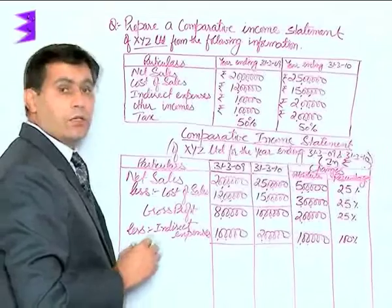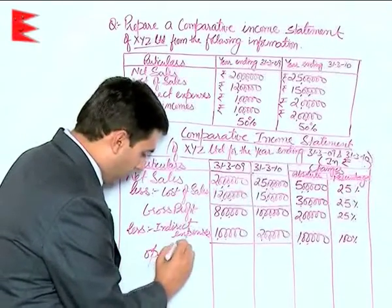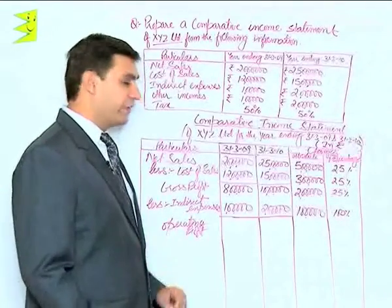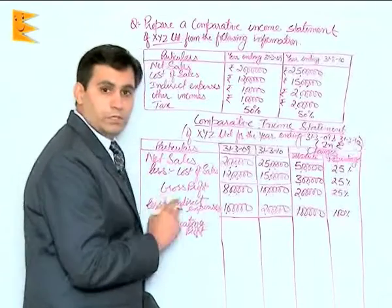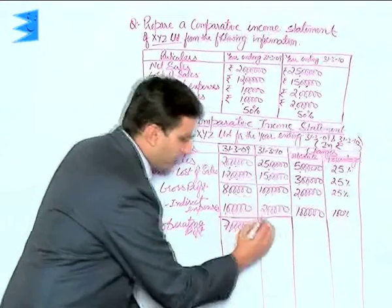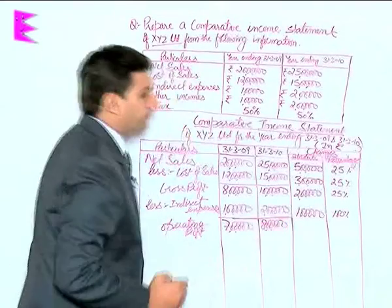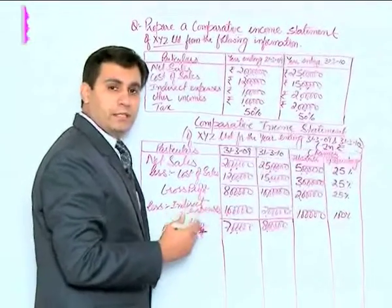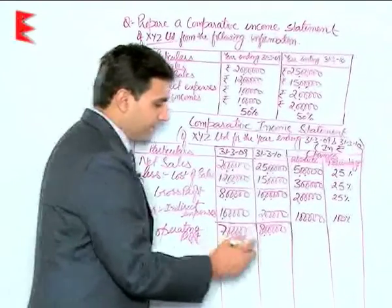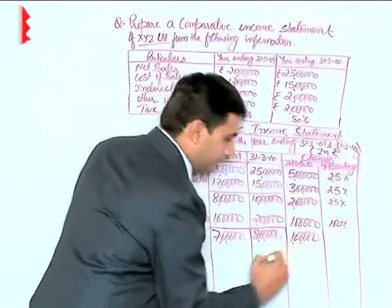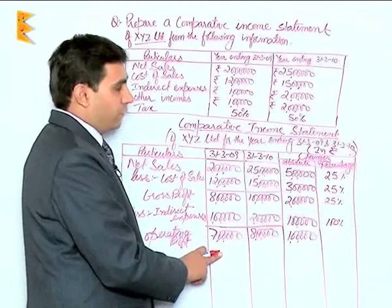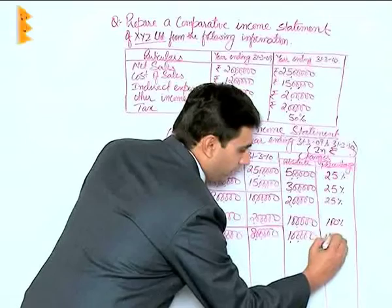After deducting indirect expenses, we get operating profit. Operating profit is calculated by deducting indirect expenses from gross profit: for the previous year it is 8 lakhs minus 1 lakh, which is 7 lakhs; and for the current year it is 10 lakhs minus 2 lakhs, which is 8 lakhs. The absolute change is 8 lakhs minus 7 lakhs, which is 1 lakh. The percentage change is 1 lakh divided by 7 lakhs into 100, which is approximately 14.2 percent.